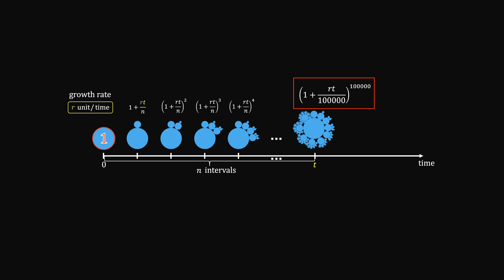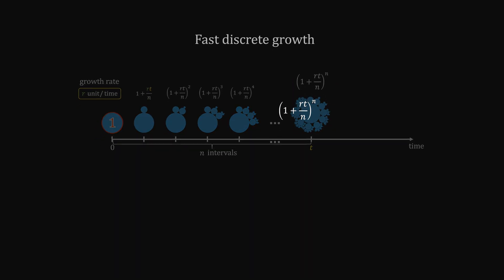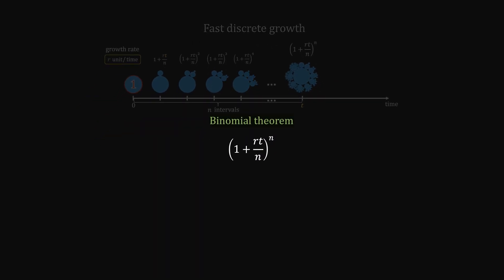But no matter how many intervals you use, it's still discrete. To make it truly continuous, we use binomial theorem, breaking up the result into many components.